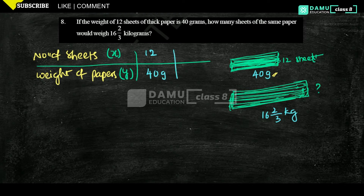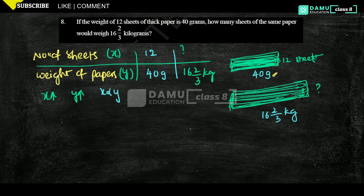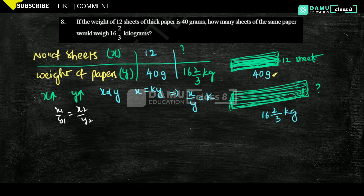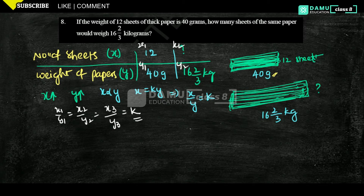For 16 and 2/3 kilograms, we need to find the number of sheets. If the number of sheets increases, weight also increases — this is direct proportion. So x is directly proportional to y, meaning x by y equals constant k, giving x1 by y1 equals x2 by y2.